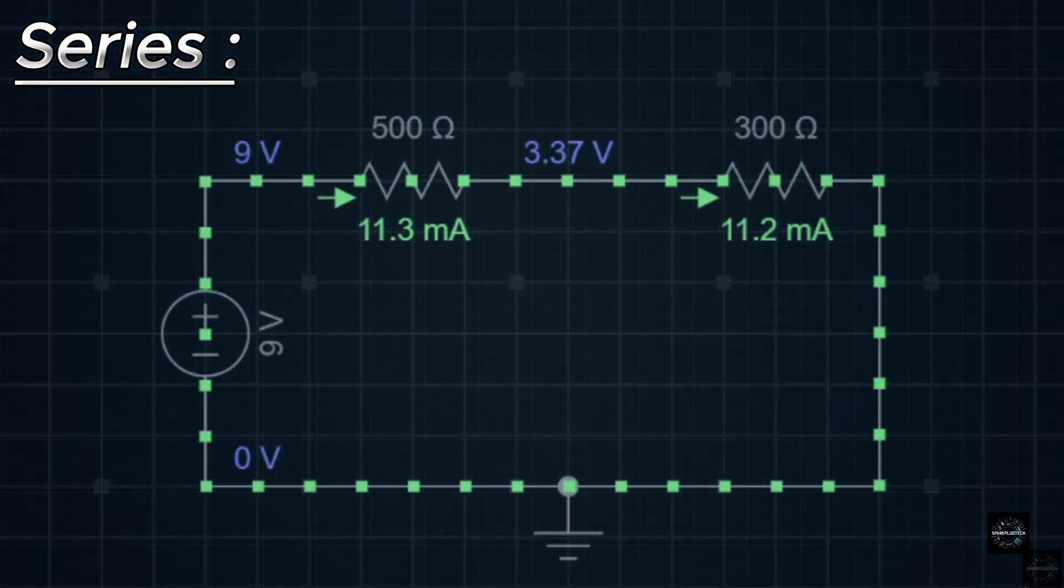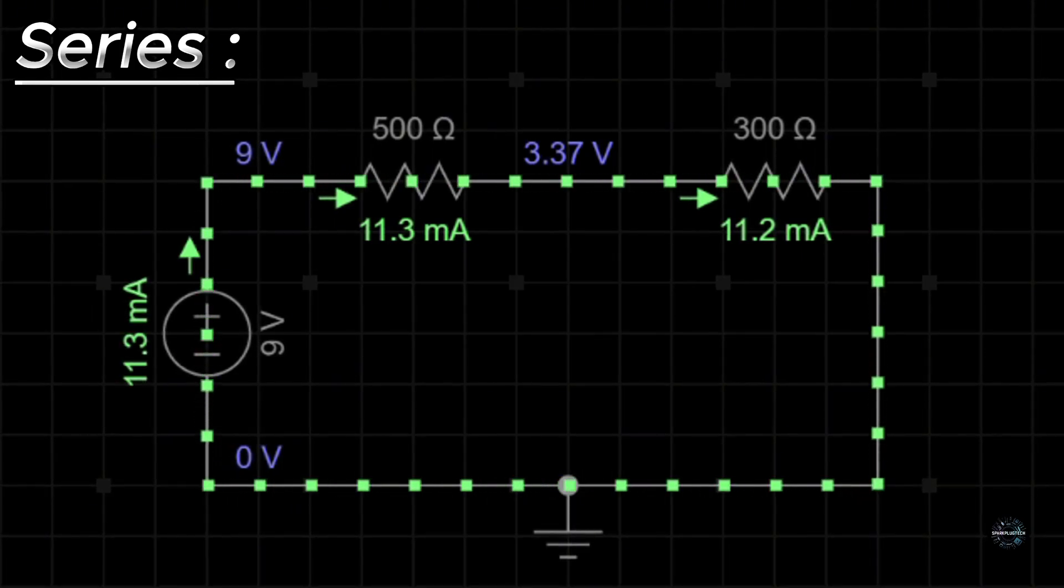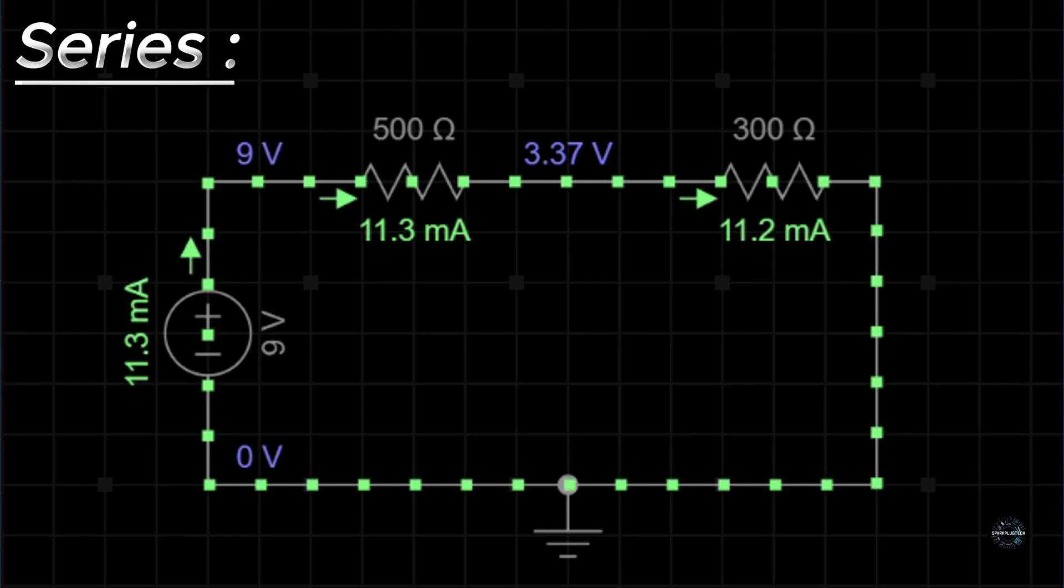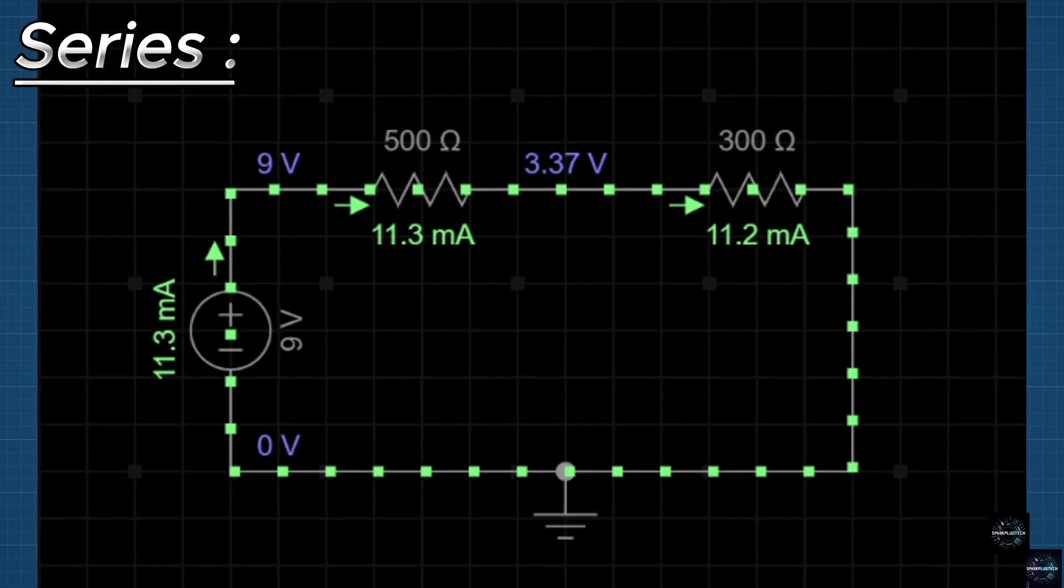First, let's talk about resistors in series. When resistors are connected in series, the current flows through each resistor sequentially. The total resistance is the sum of the individual resistances. Here's the formula.